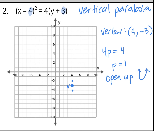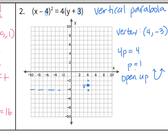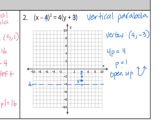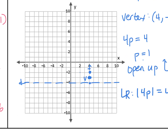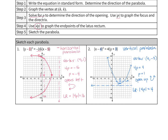Since the parabola opens up, the point below the vertex is the directrix, and the point above is the focus. The latus rectum has length absolute value of 4p, which is just 4. Starting from the focus, go 2 units to the left and 2 units to the right, then connect with a dotted line — that's the latus rectum. Now sketch the parabola using those two endpoints as a guide for the width. And that's our vertical parabola.